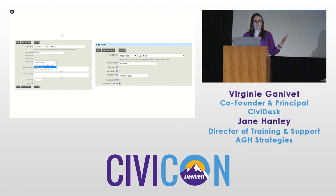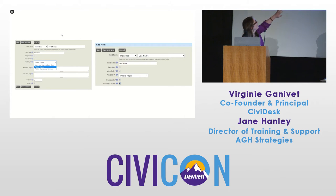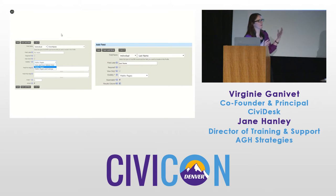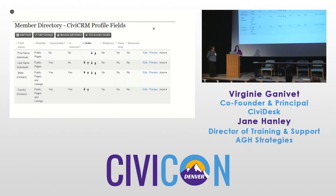If you want your directory to be fully searchable, you can have every field searchable — find someone by first name, city, last name, or employer. But maybe you just want last name and city, or maybe you don't want it searchable at all. The 'public pages and listings' setting also affects what actually shows up in the directory. So the list of all fields you're adding to your directory can have different options — some are public pages and listings, some are just public pages, some are searchable, some are not.